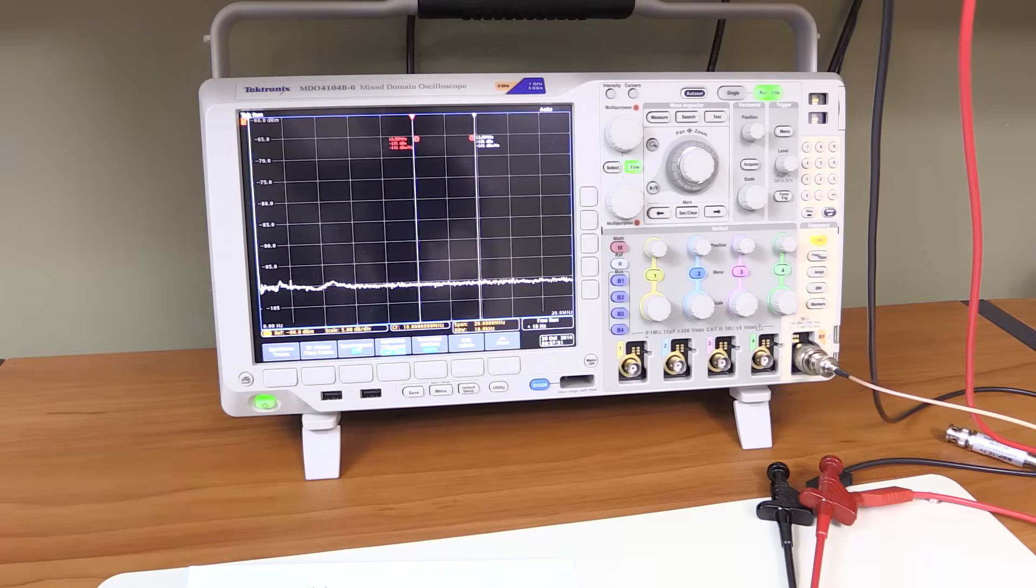But anyway, see, there we go. Now it goes up to negative 101 dBm. And that's how simple that is. We have successfully determined the noise figure of an amplifier using the gain method.